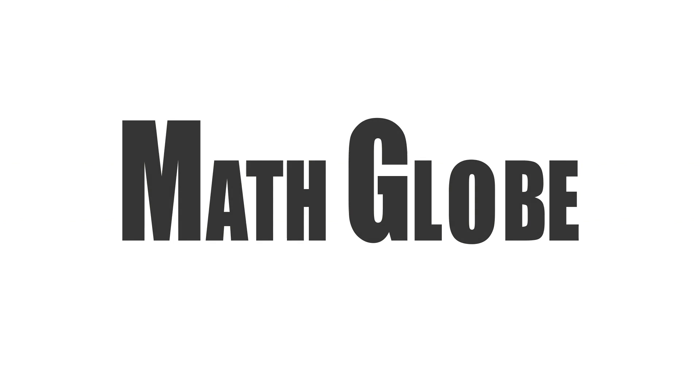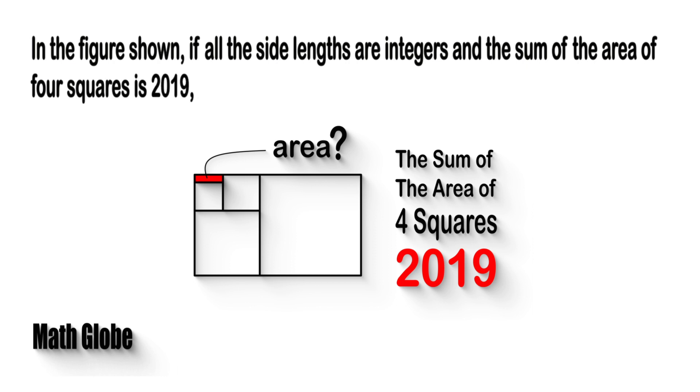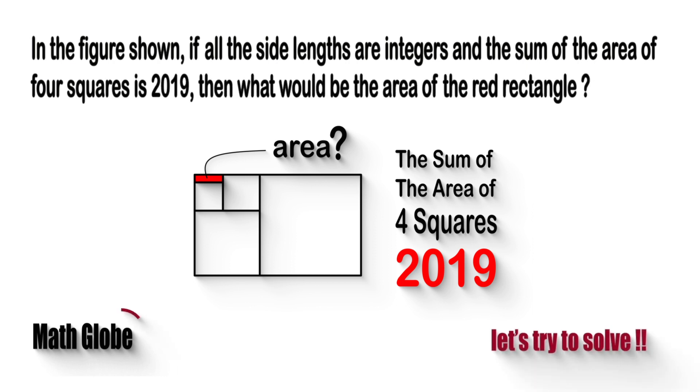Hi, this is Math Globe. In the figure shown, if all the side lengths are integers and the sum of the area of four squares is 2019, then what would be the area of the red rectangle? Let the solution come.